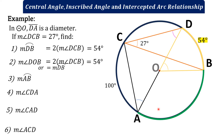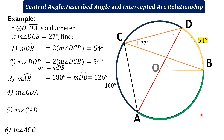Number 3: find the measure of arc AB. Arc AB is part of semicircle DBA. Arc DB is 54 degrees, and since a semicircle is equivalent to 180 degrees, arc AB equals 180 degrees minus 54 degrees, which is 126 degrees.